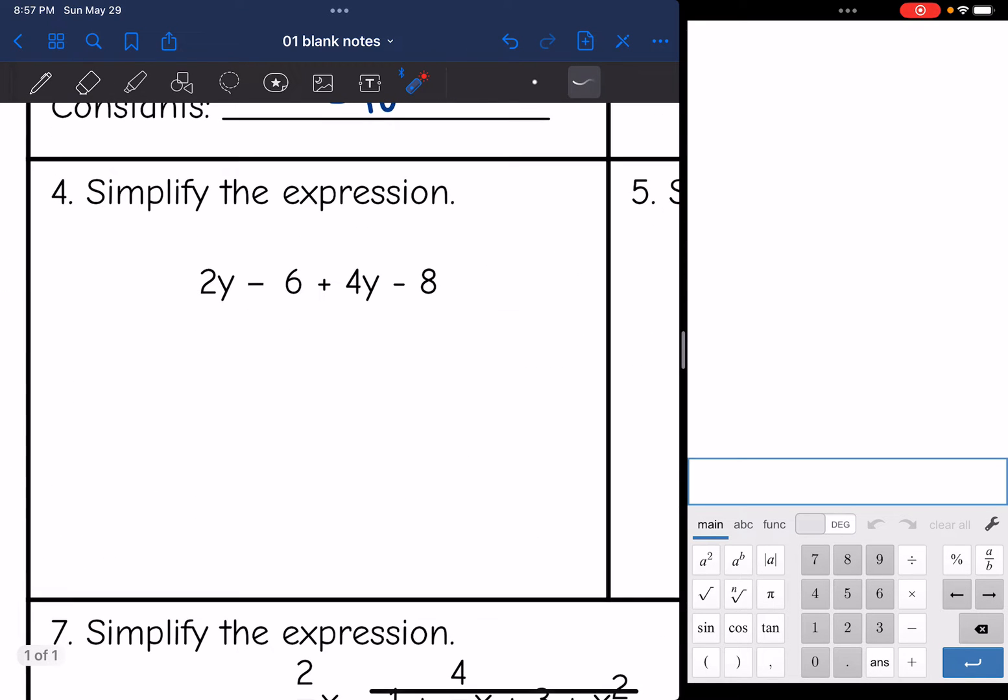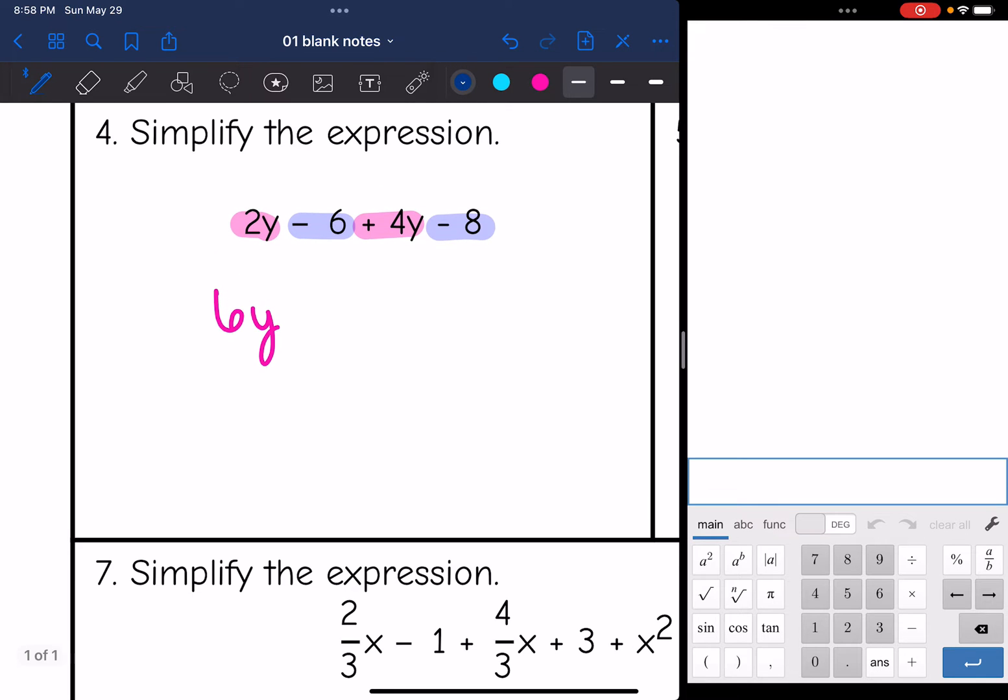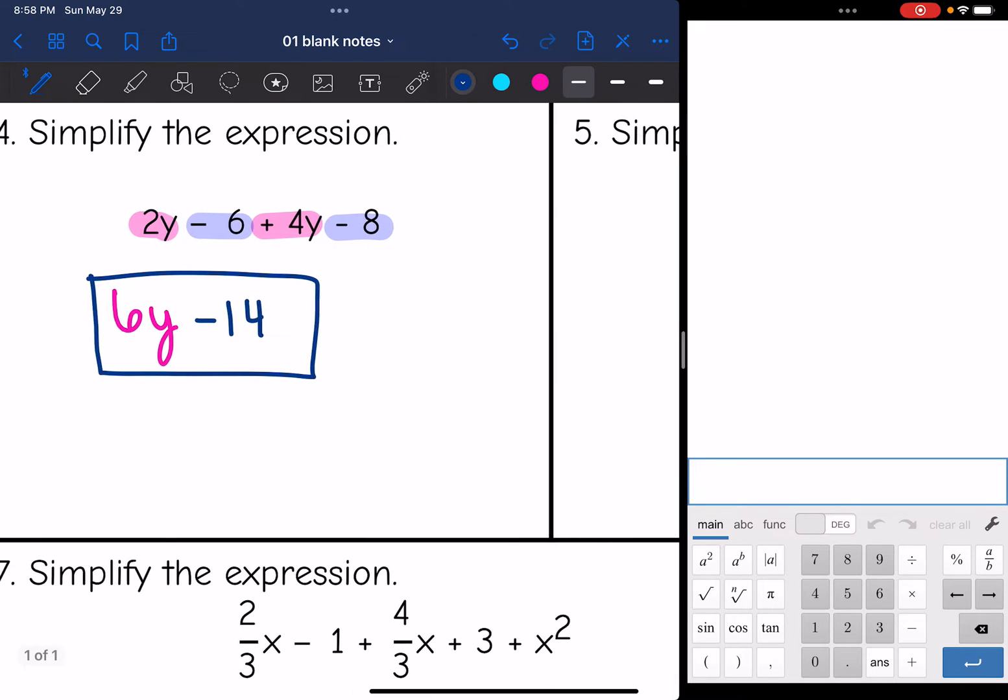All right, number 4, they want us to simplify the expression. So we're just going to combine like terms. So 2Y would combine with the positive 4Y and 2Y plus 4Y is 6Y. And then negative 6 would combine with negative 8 and negative 6 minus 8 is negative 14. So 6Y minus 14 would be the simplified expression there.